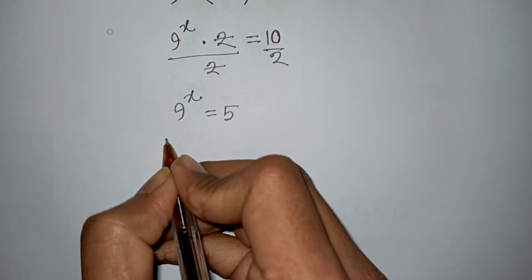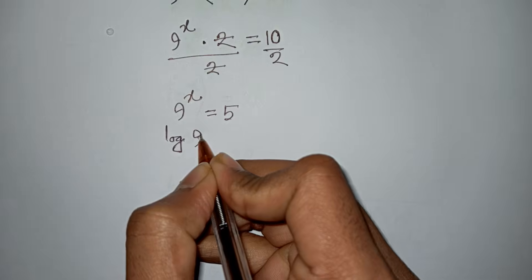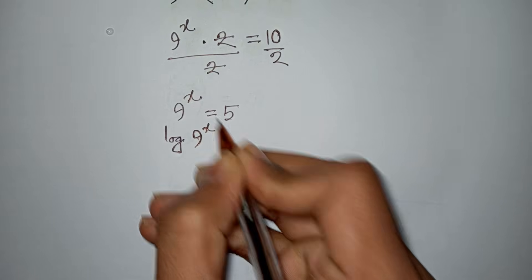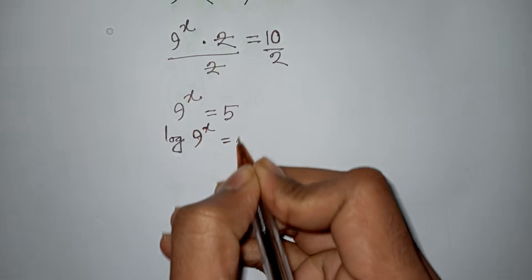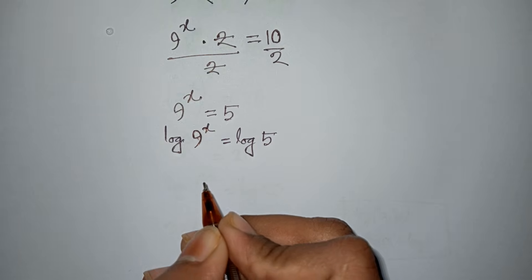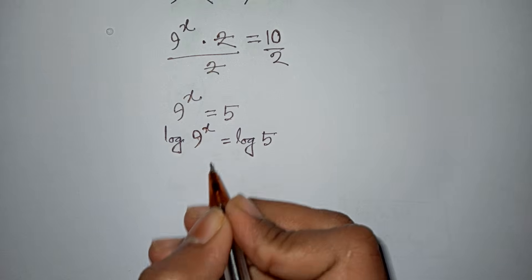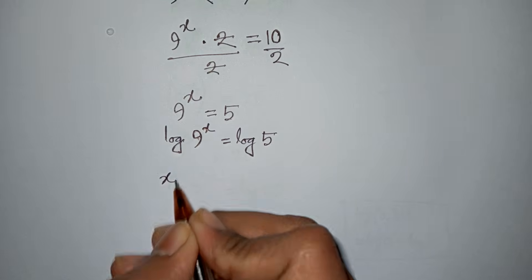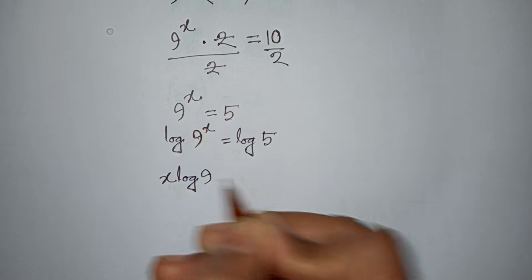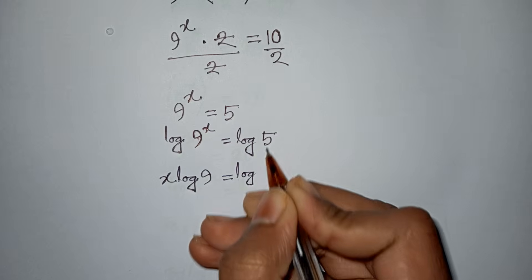Now we take log of both sides: log of 9^x is equal to log of 5. The power x moves to the front, so it becomes x times log 9 is equal to log 5.